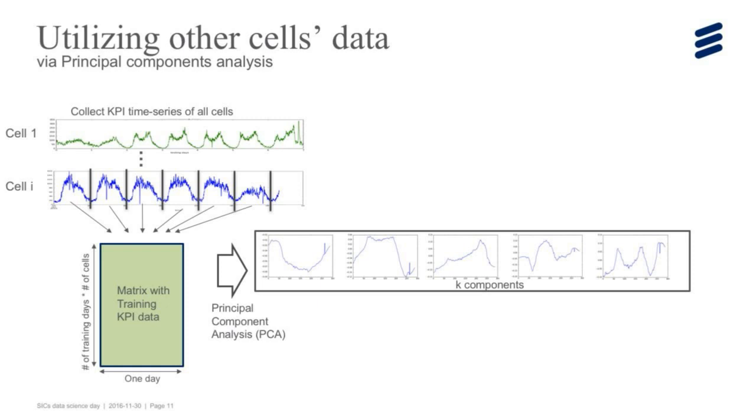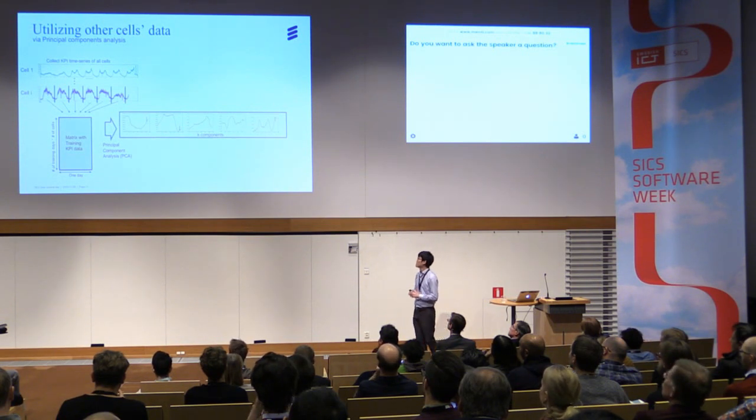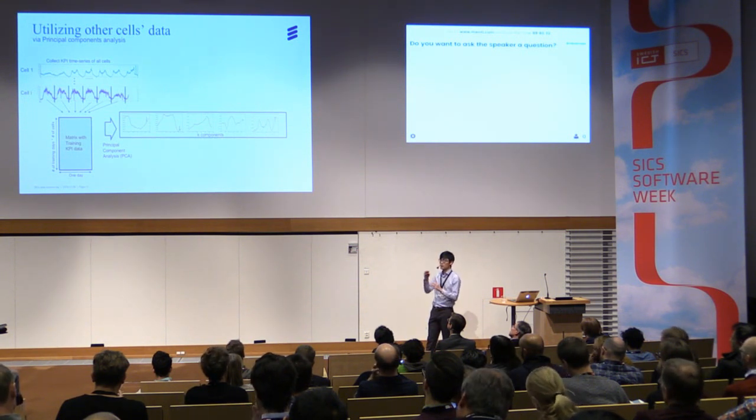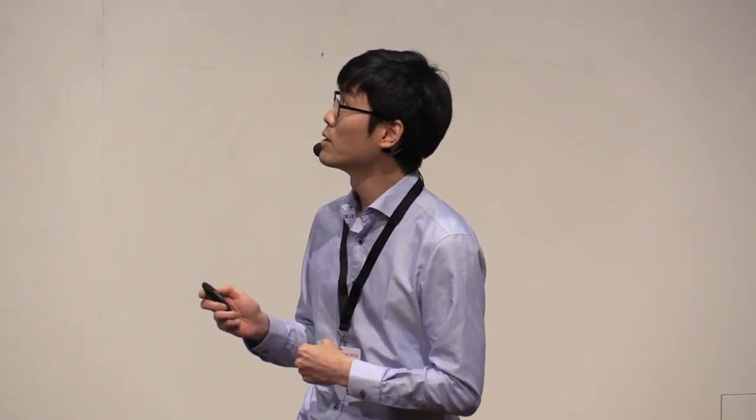On this training matrix, we run PCA algorithm. We extract the K principal components from this data, each of which expresses one day time series pattern. Thanks to the similarity between the time series shape of the group of cells, this training matrix has a low rank structure, so we can maintain a small number of principal components. This component only maintains the important shape in time series while canceling out the noise over cells. Once we have training time series data for one day and do projection onto this subspace, we obtain this pattern of that day. In other words, this pattern is expressed by the linear combination of K principal components.